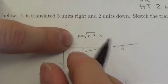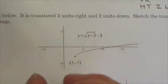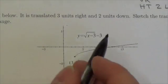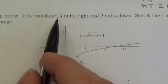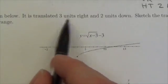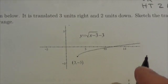The base function is √x. This has already been moved 3 to the right and 3 down. What we're going to do is transform this an additional 3 units right and 2 units down, then sketch the transformed function and state the domain and range.